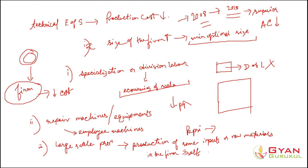To summarize the reasons for the fall in average cost due to economies of scale: first, specialization and division of labor become possible once the firm reaches the minimum optimal size. Second, the firm can now repair machines and equipment effectively by employing mechanics. Third, large-scale production allows the firm to produce some inputs or raw materials in-house. Fourth, technology keeps updating in the long run, causing the average cost to fall.